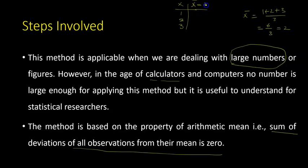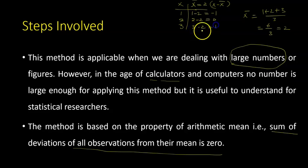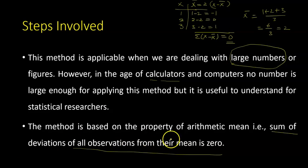So x-bar equals 2. If you calculate x minus x-bar, then it is 1−2=−1, then 2−2=0, and 3−2=1. The sum of deviations (sum of x minus x-bar) equals zero. This is the property of arithmetic mean — that's why it is called a central figure. The sum of deviations from the mean is zero, and this method uses that property.